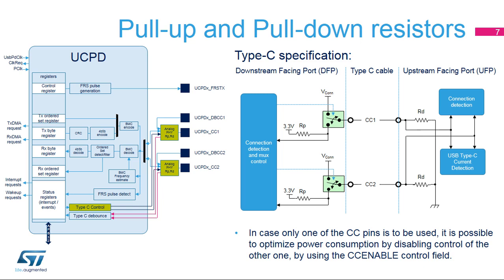The STM32G0 implements internal RP and RD resistors connected to CC1 and CC2 pins, required by the USB PD specification to detect a connection, determine whether the cable is flipped, and determine the default available power (since current carrying capability depends on the values of RP). A unique CC pin — CC1 or CC2 — according to cable flip is used to transport PD messages. The unused CC pin may become the VCON pin supplying power to ICs in active cables. To conserve power, the unused CC pin can also be disabled by programming the CC enable field in the UCPD_CR register.